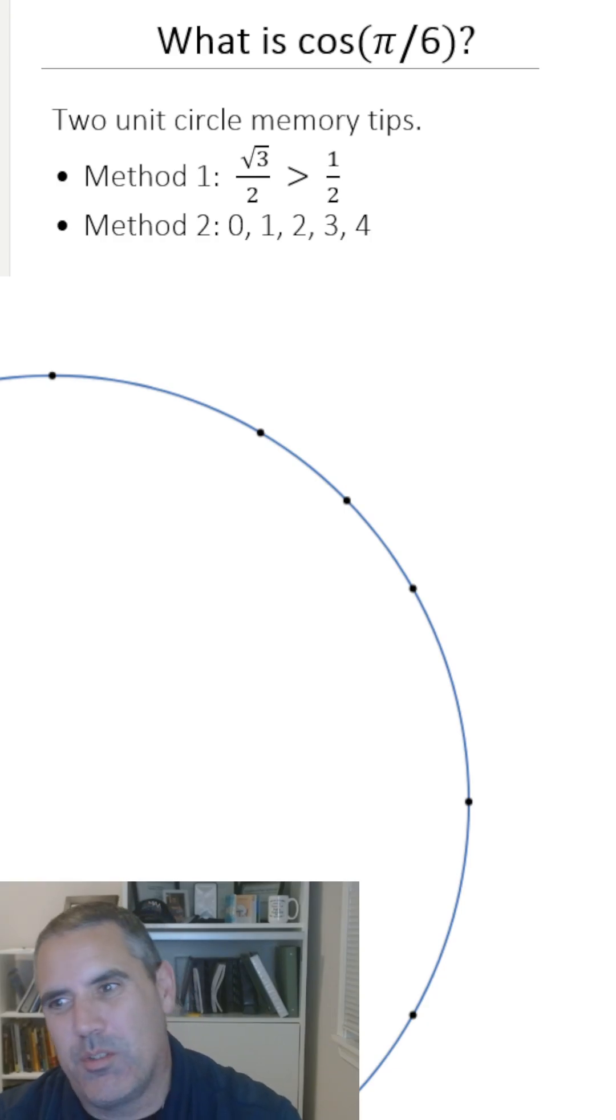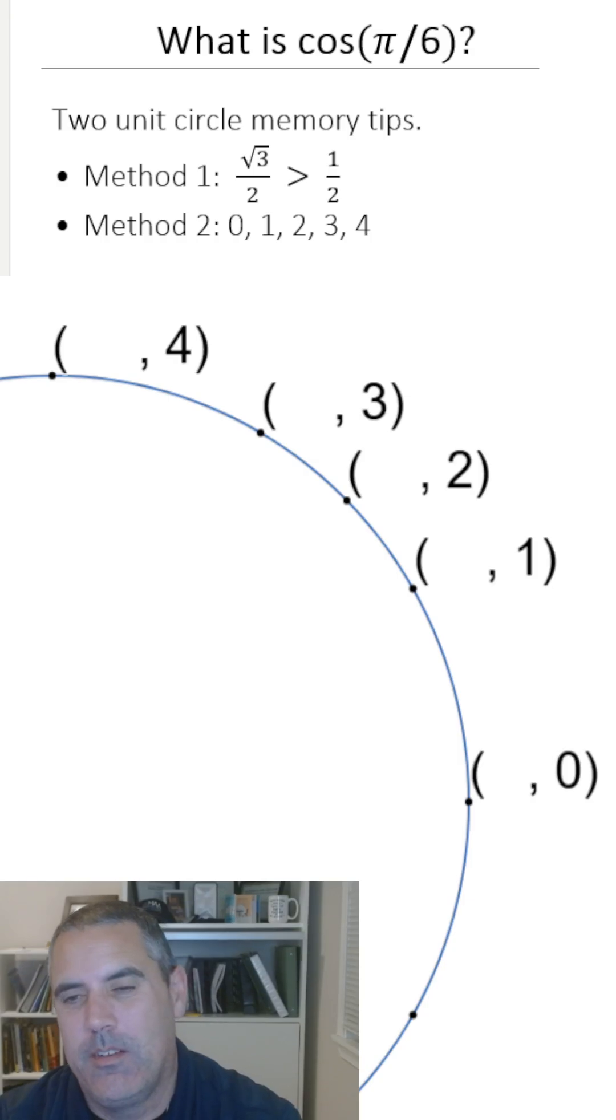It's just a quick note. If you look at those numbers, there is a sort of a pattern. This isn't a mathematical thing. If you can remember that the y value is 0 on the right, then you can do 0, 1, 2, 3, 4. This is not the final answer. This is just a way to remember it.